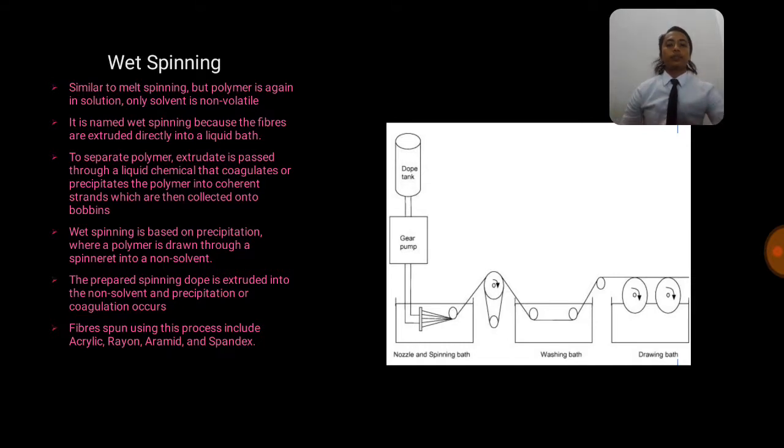For the wet spinning, wet spinning looks similar to the melt spinning but polymer is again in solution, only solvent is non-volatile. It is named wet spinning because the fibers are extruded directly into a liquid bath. A polymer extrudate is passed through a liquid chemical that coagulates or precipitates the polymer into coherent strands which are then collected onto bobbin. Wet spinning is based on precipitation where a polymer is run through a spinneret into a non-solvent. The prepared spinning solution is extruded into the non-solvent and precipitation or coagulation will occur.